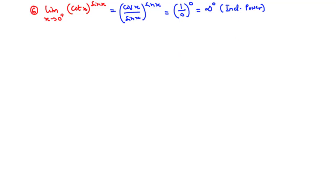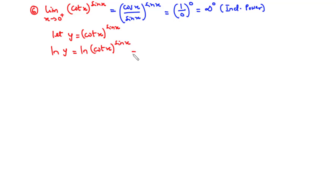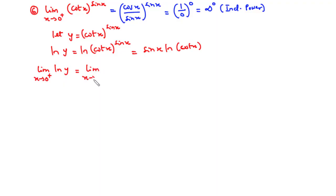We manipulate the function by letting y = (cos x)^(sin x), then taking the natural log of both sides: ln y = ln((cos x)^(sin x)) = sin x · ln(cot x). Putting this in the limit: the limit as x approaches 0⁺ of ln y equals the limit as x approaches 0⁺ of sin x · ln(cot x). Direct substitution gives sin 0 = 0 times ln(cot 0) = 0 times infinity — still indeterminate.